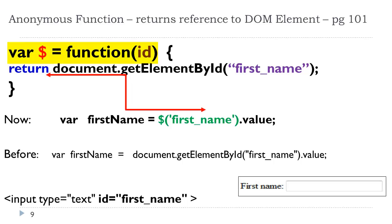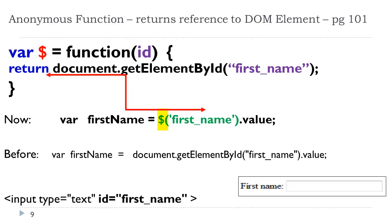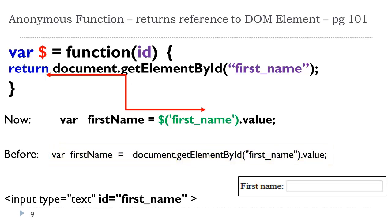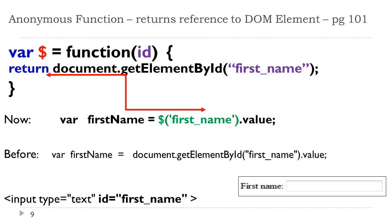Here we have our 'var dollar equals function' which we saw on the previous slide. Now how we would actually use that — we could store that reference in a variable. So here we have 'var firstName equals dollar(id)'. So essentially we're using an ID value as the argument and the function is doing the rest. Rather than saying 'var firstName equals document.getElementById(firstName).value', this is a much shorter way of doing it. The author is doing this in a lot of the examples — you're more than welcome to do it also, though I'm not requiring it.